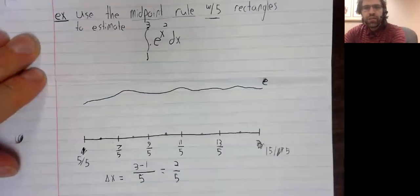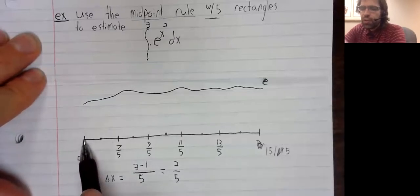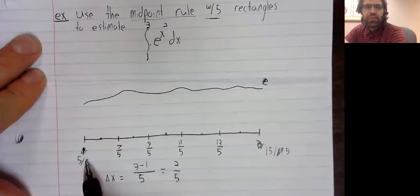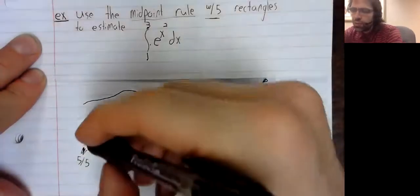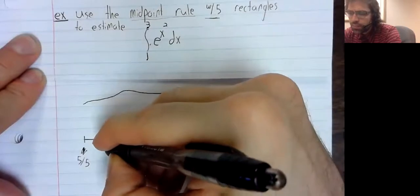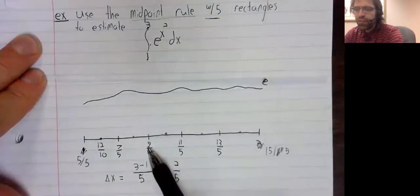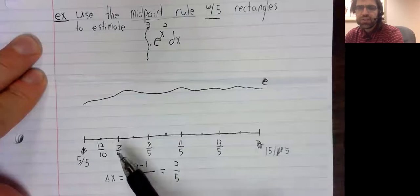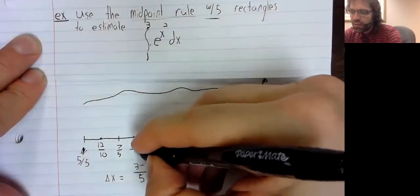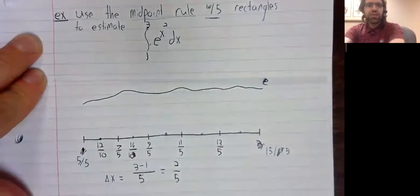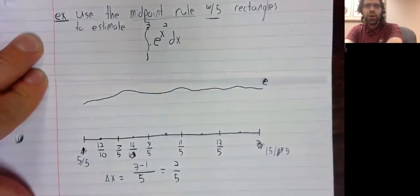And then we find the midpoints. And the midpoints are the averages of these values. So, seven-fifths plus five-fifths is 12-fifths, and nine-fifths plus seven-fifths is 16-fifths. Divided by two is 16-tenths.